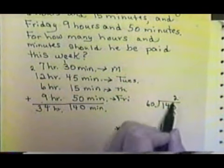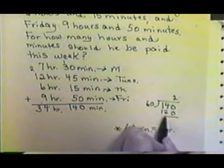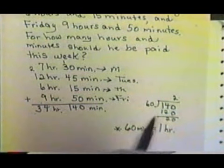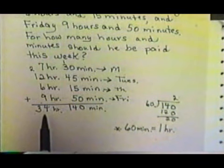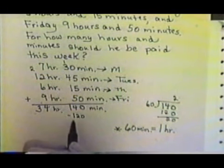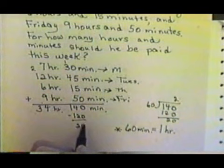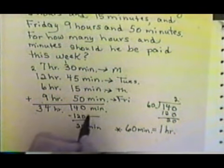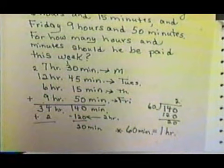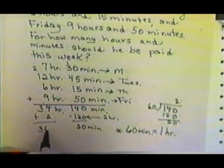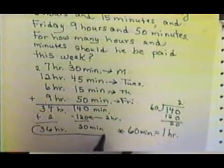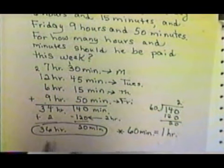2 times 0 is 0, 2 times 6 is 12, and I have 20 left over. So that means I'm going to have 2 hours to carry over to my 34 hours, and I'll have 20 minutes left over. I'm going to subtract that 120 from 140, leaving me with 20 minutes. This 120 is my 2 hours. So I'm going to add that 2 hours to the 34 hours and end up with 36 hours, 20 minutes. So this would be my answer: 36 hours, 20 minutes.